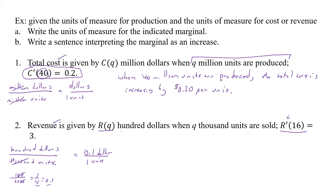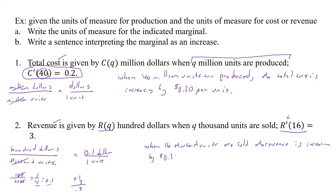When 16,000 units are sold, the revenue is increasing by... we have the marginal value of 3, and since our conversion is $0.10 per unit, we take 3 times 0.1, which equals 0.3. So the revenue is increasing by $0.30 per unit when 16,000 units are sold.